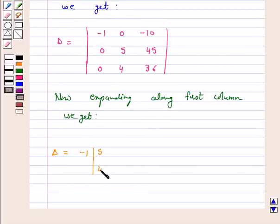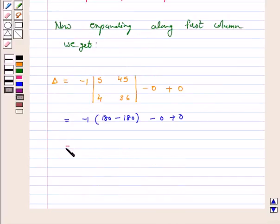Determinant 5, 4, 4 5, 3 6 minus 0 into minus 0 plus 0. So, which is equal to minus 1 into 180 minus 180 minus 0 plus 0, which is again equal to 0.